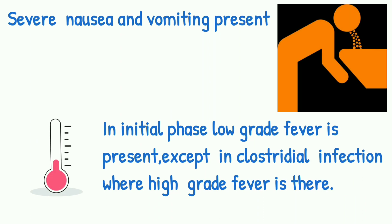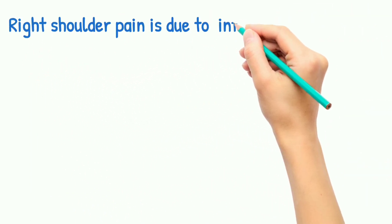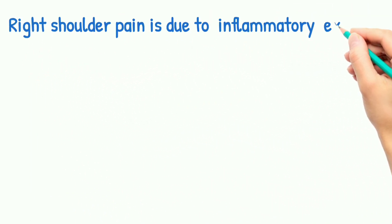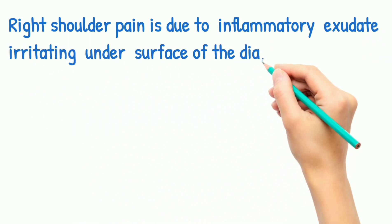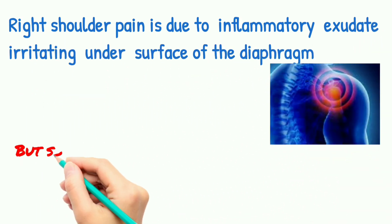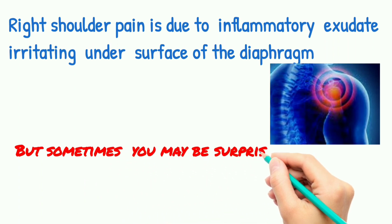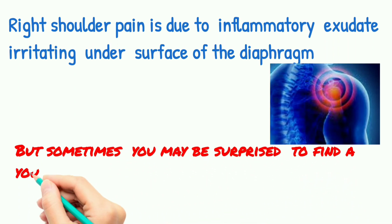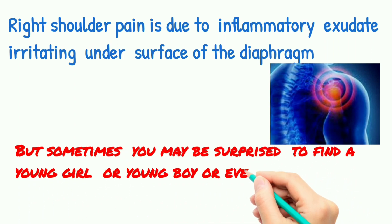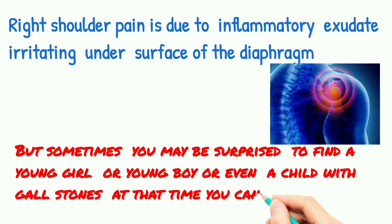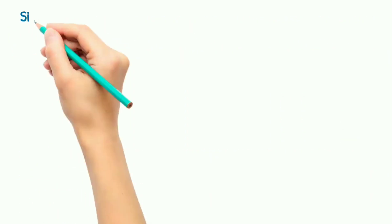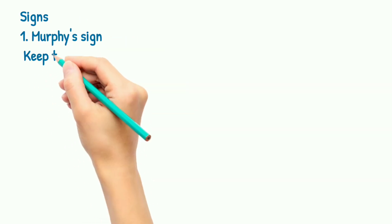An exception is Clostridial infection, where high-grade fever is present. There is also right shoulder pain, due to the inflammatory exudate irritating the under-surface of the diaphragm. Sometimes a young boy, girl, or even a child may present with gallstones — suspect hemolytic anemias in such cases.